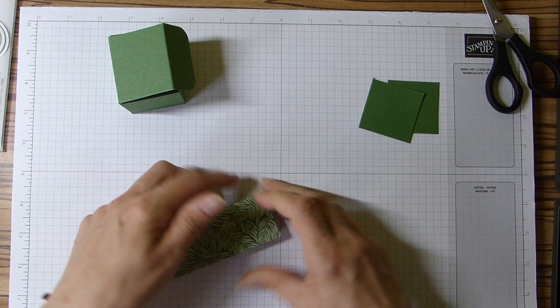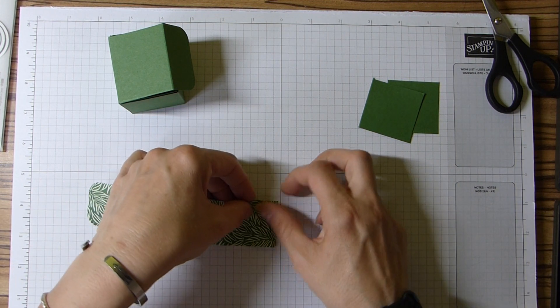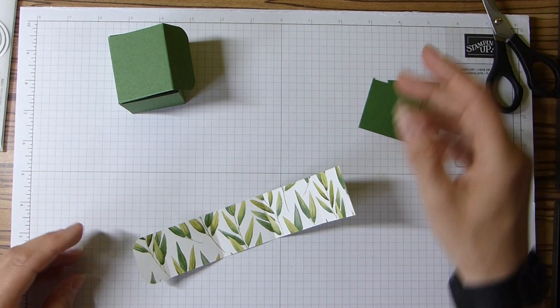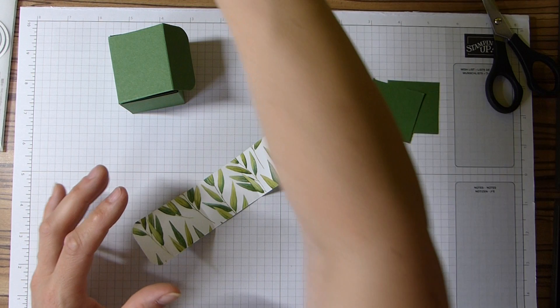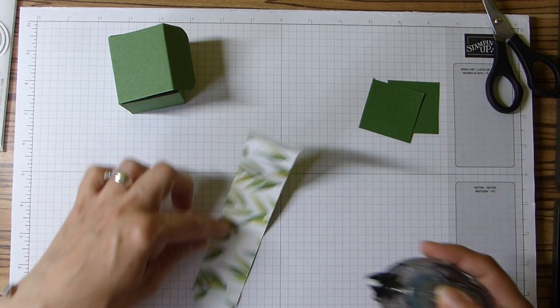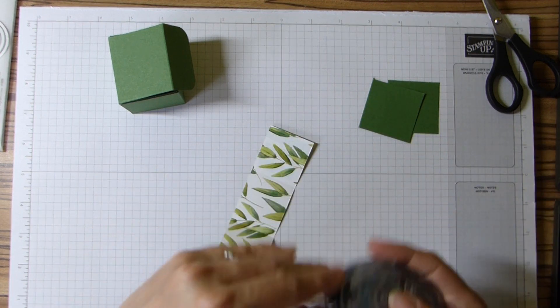And the last one just there, and I'm just making sure that the sides are still lined up. So once that's done, I'm just going to grab my snail, and I'm just going to pop some snail in the front part and just on this final square.